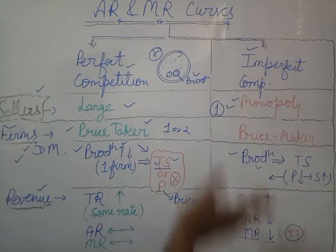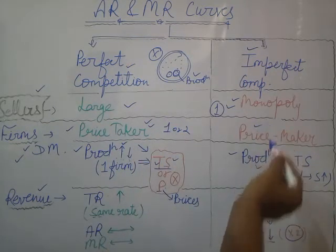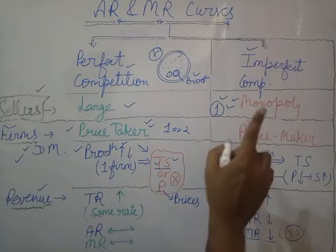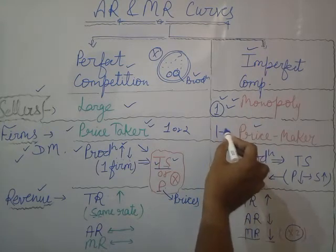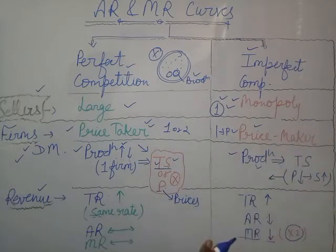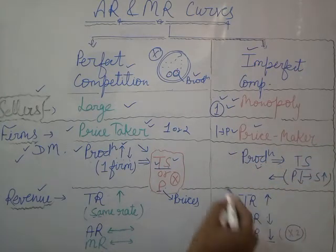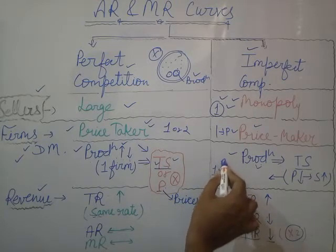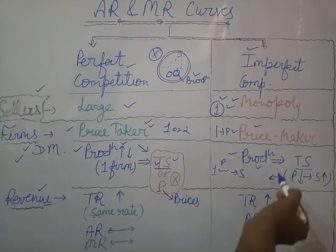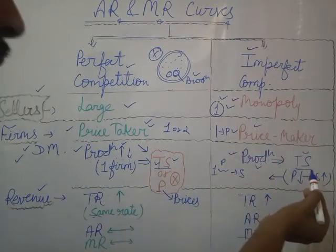In case of imperfect competition, unlike perfect competition where firms were price takers, here firms will be price makers because there is only a single seller in the market. Since there is only one seller, they can set prices according to their own decision. Here, production leads to total supply — meaning total supply is driven by the level of production. Even a small change in production by this single seller will impact the overall supply.